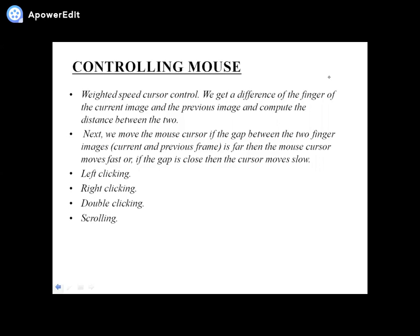The next slide is about controlling the mouse. For weighted speed cursor control, we get the difference of the finger position in the current image and the previous image, and compute the distance between the two. We then move the cursor — if the gap between the two finger images is far, then the mouse cursor moves fast; if the gap is close, then the cursor moves slow. It includes features like left clicking, right clicking, double clicking, and scrolling.